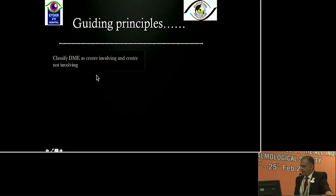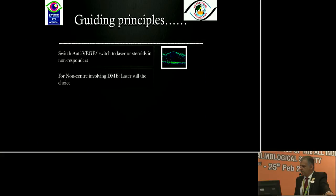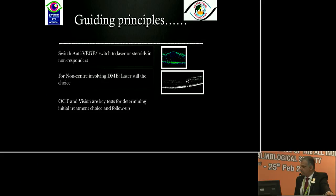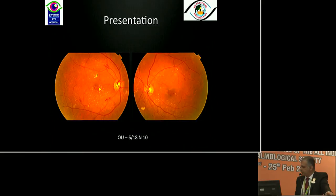The guiding principles: first classify the DME as central-involving or non-central-involving. Look for good glycemic control including blood pressure, serum lipids, and anemia. Anti-VEGF agents are now the first line of choice, but there are select groups needing alternative treatment. When to switch from anti-VEGF — either to laser or steroid — in non-responders: for example, cystoid edema may respond better to steroid than anti-VEGF alone. For non-central DME, laser still has a role. OCT and vision are key tests for determining treatment outcome, though even 6/6 patients warrant treatment if there is significance on clinical examination. Vitreomacular traction changes the perspective toward surgical intervention.